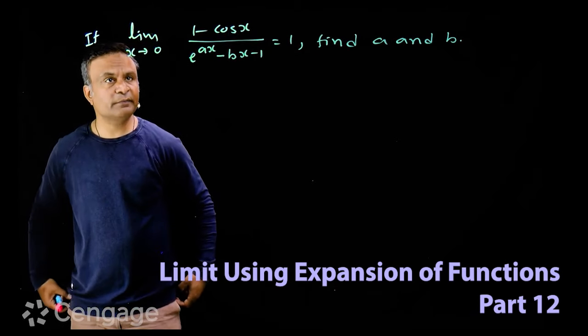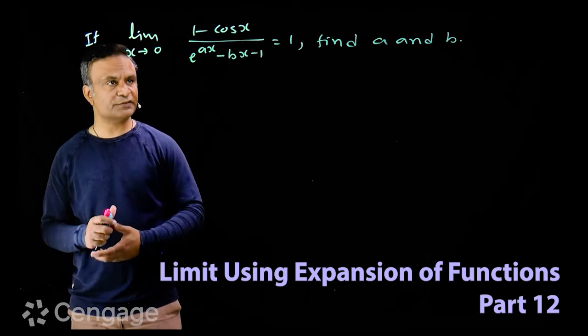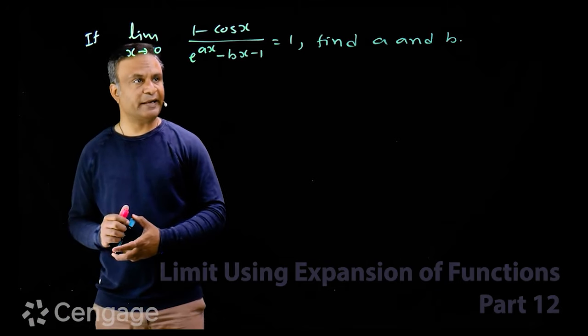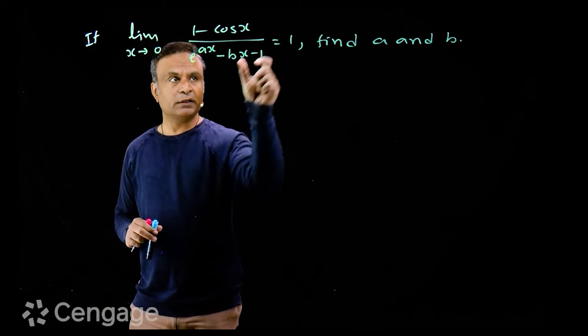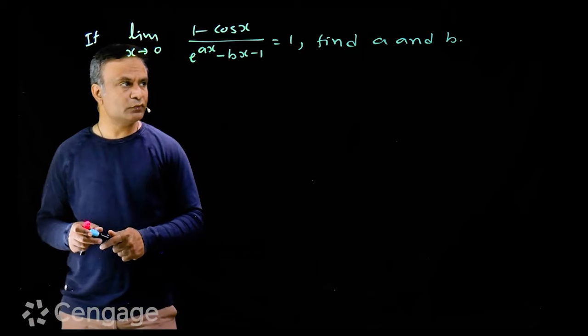Okay, now we have this question: if limit x tends to 0 of (1 minus cos x) upon (e^(ax) minus bx minus 1) is equal to 1, then find the values of a and b.